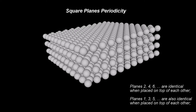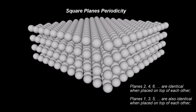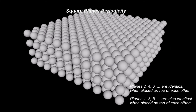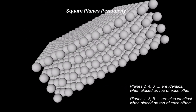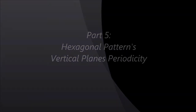It is important to note that a translation along a direction of 45 degrees separates the two types of planes. No rotation is needed to transform one plane into another. Part 5: Hexagonal Patterns, Vertical Planes, Periodicity.